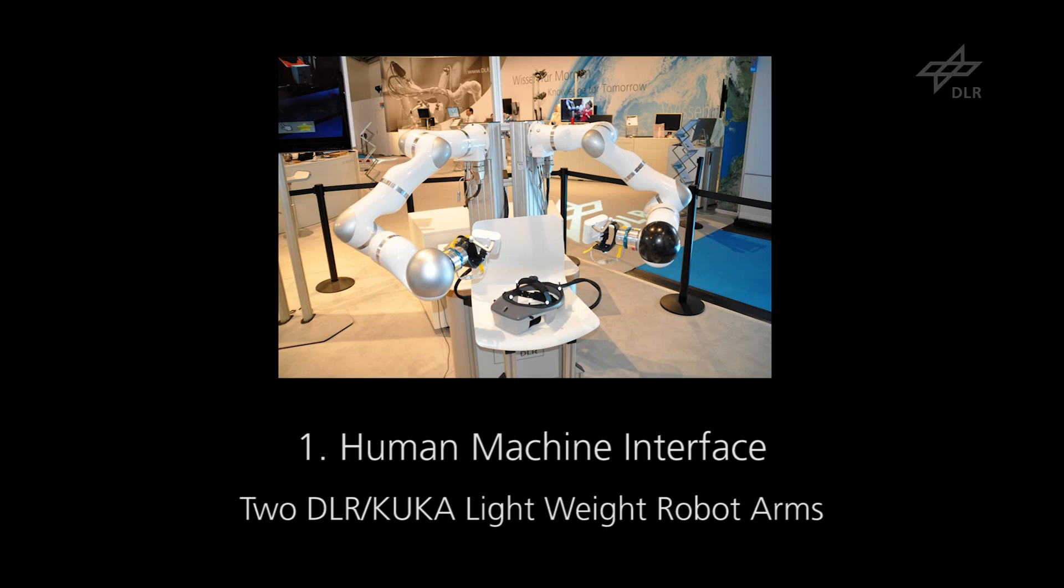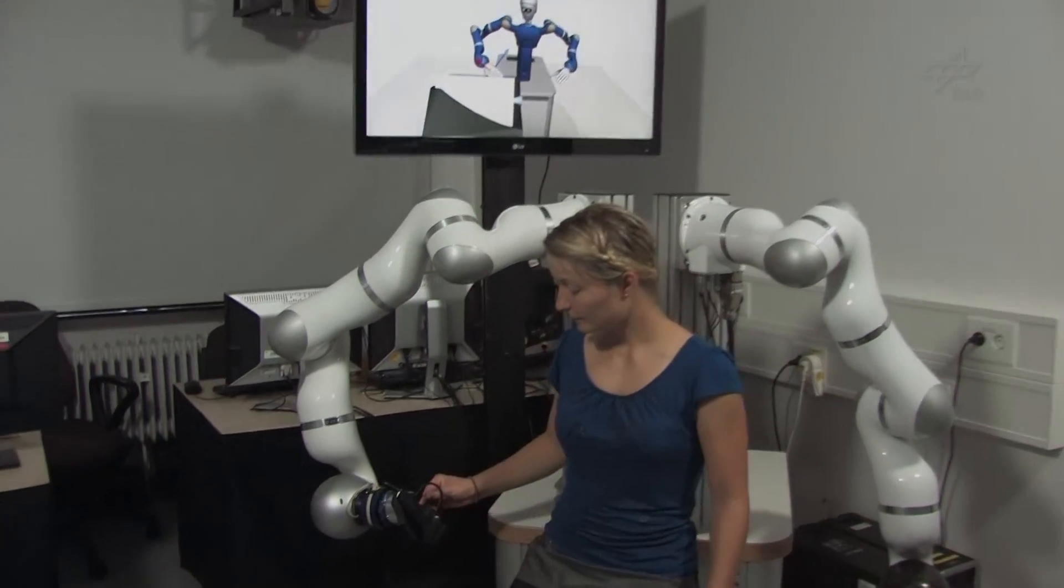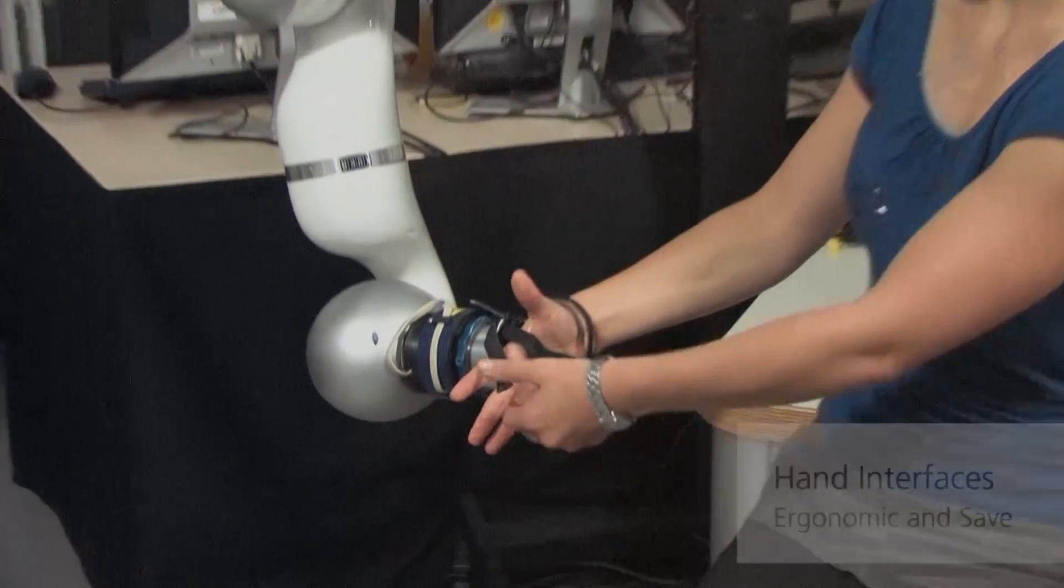Our bimanual haptic device is composed of two lightweight robot arms. Torque and position sensors are integrated into each joint enabling both impedance and admittance control.